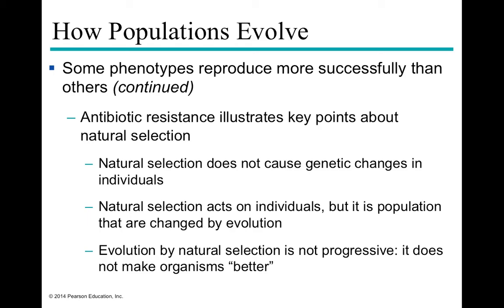Antibiotic resistance is another example of natural selection. If a patient doesn't complete the full course of antibiotics, some bacteria in the body already have resistance; those bacteria reproduce and can spread to others. In just a few generations, almost all bacteria — for example — are now resistant to penicillin. Natural selection cannot cause a genetic change in an individual; you are born with your genes. Natural selection acts on allelic frequency changes across a population from one generation to the next.